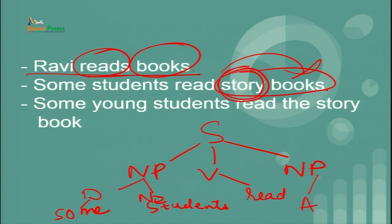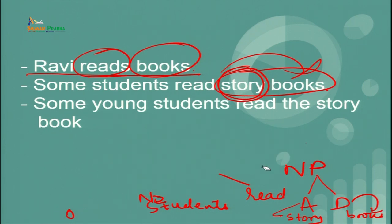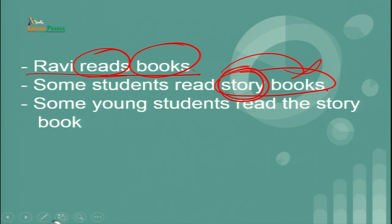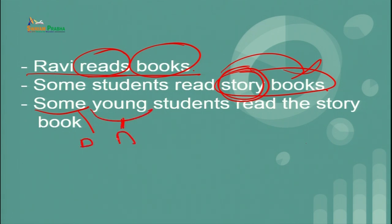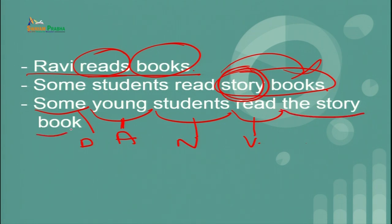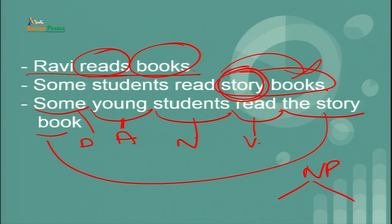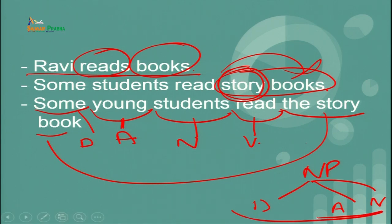In the next example, 'some young students read the story book': 'some' is a determiner, 'young' is an adjective, 'students' is a noun, and 'read' is the verb. For 'the story book': 'the' is a determiner, 'story' is an adjective, and 'book' is a noun. You can easily make a tree diagram of these components.